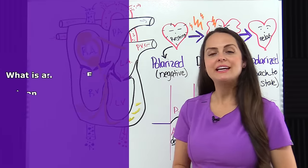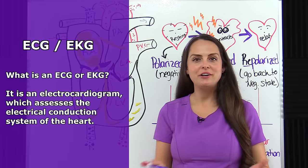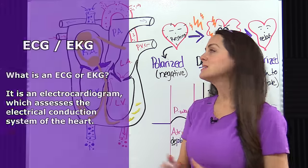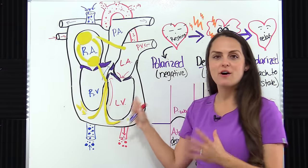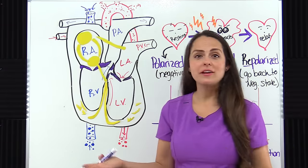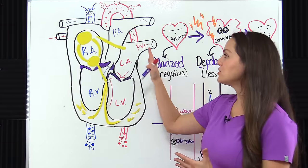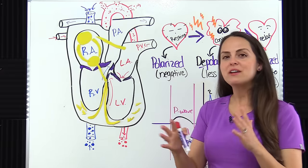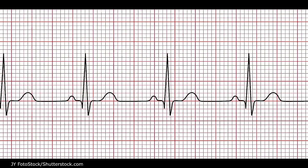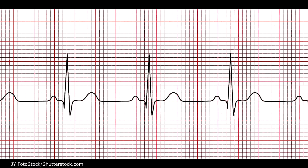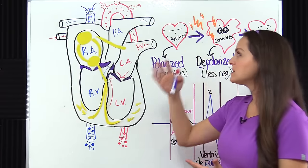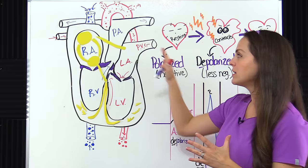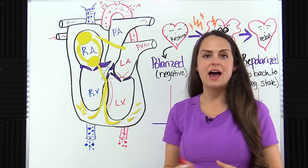An ECG, also known as an EKG, stands for electrocardiogram. An electrocardiogram assesses the electrical conduction system of the heart, and the whole role of the electrical conduction system is to get your heart to contract and pump blood throughout your body. To help us understand how to interpret an EKG, we first have to go back to the basics and talk about how the blood flows through the heart.